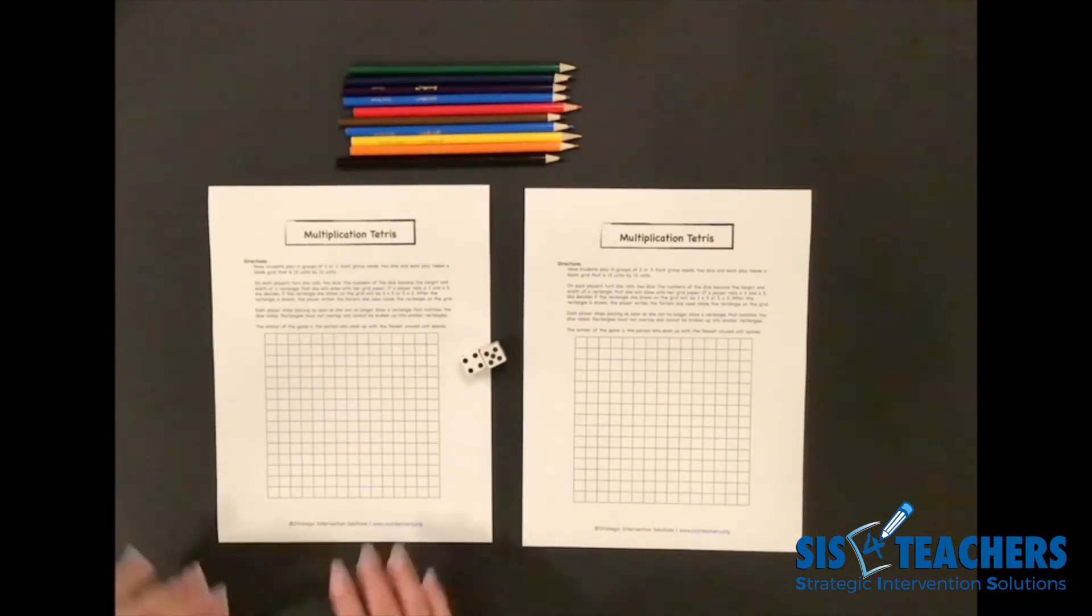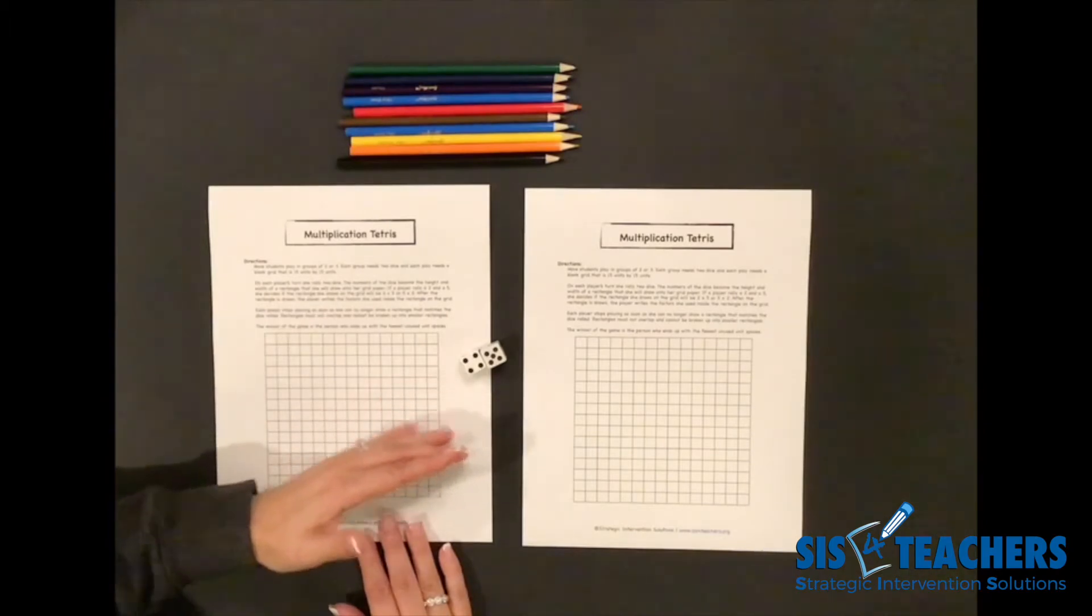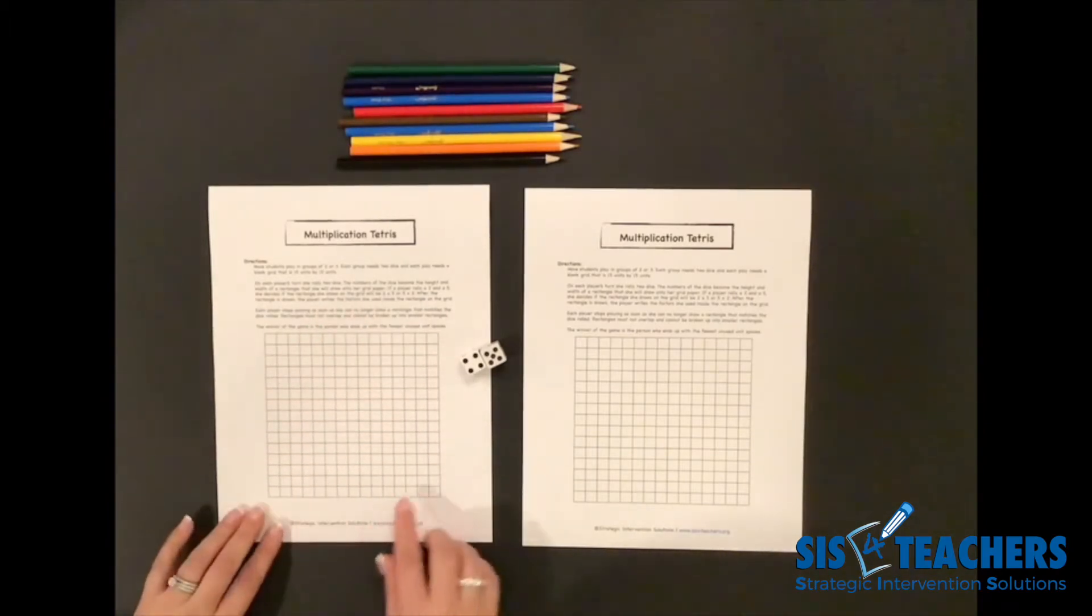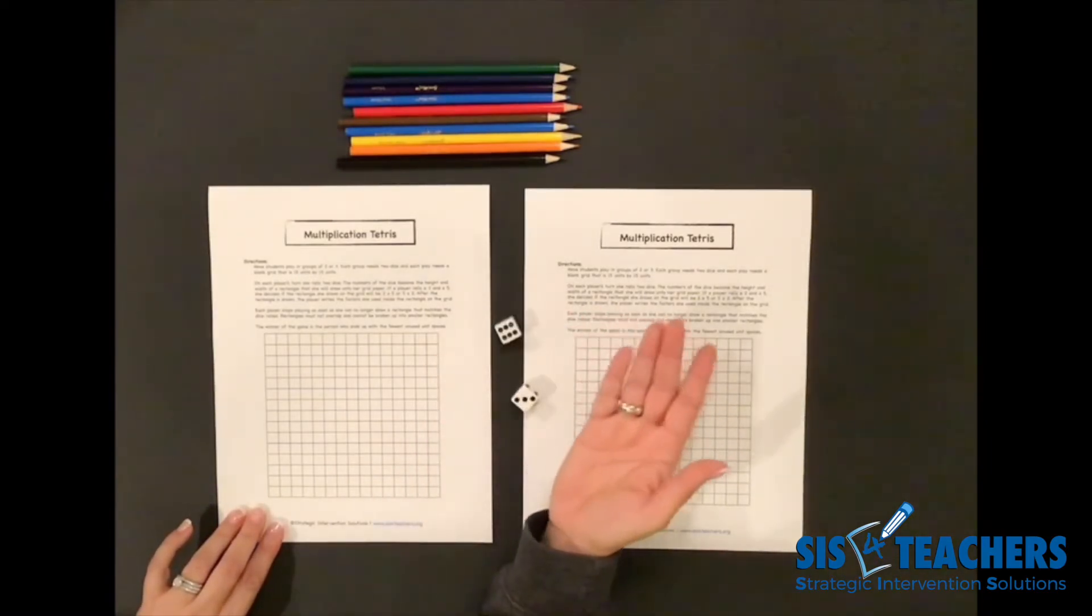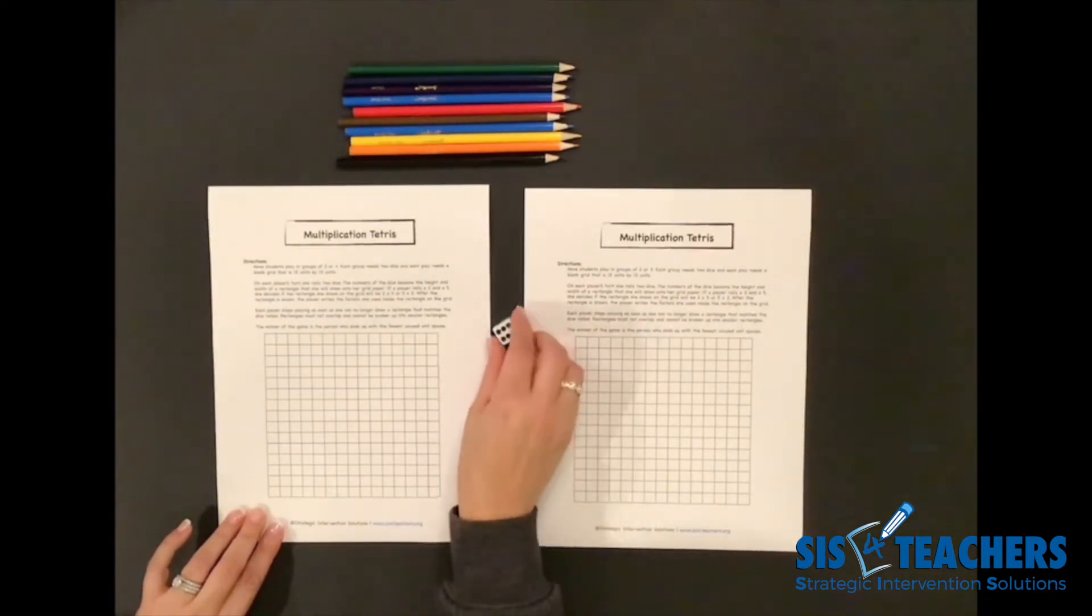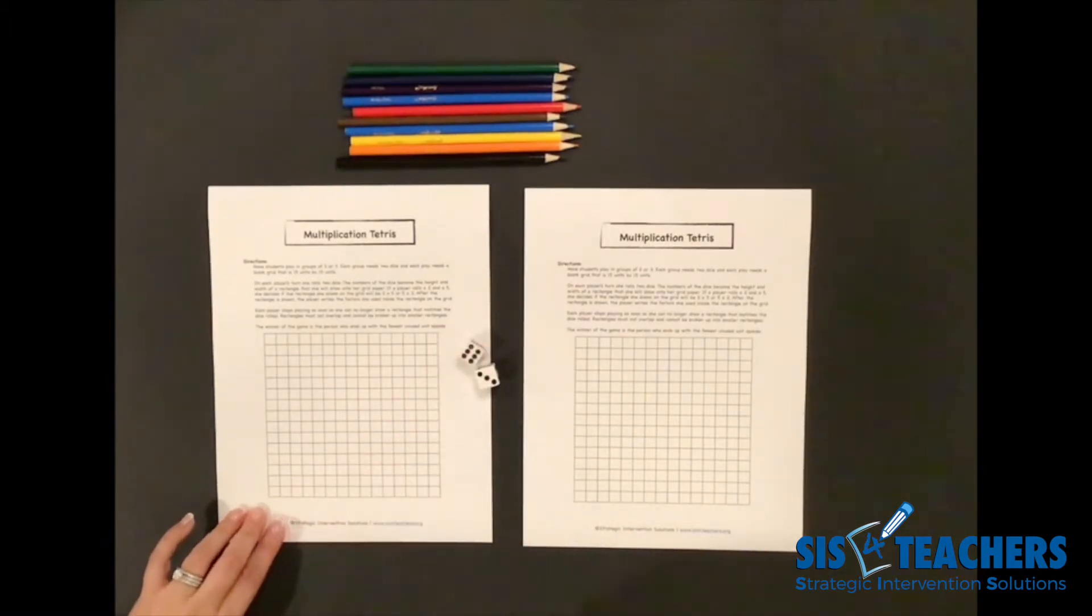You have to be careful because you can put any of your boxes wherever you want. However, as the grid starts to get full, you want to make sure that you're optimizing the use of the boxes. The game will end if you roll and you are unable to put the total area or product inside of your grid, meaning you don't have enough spots.